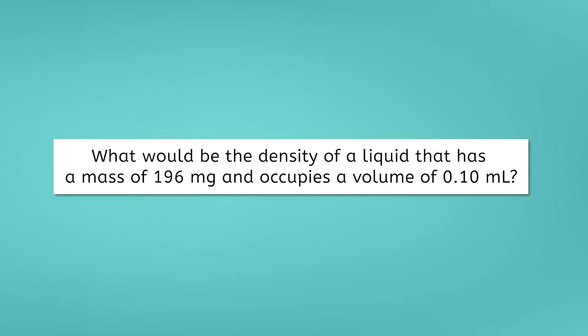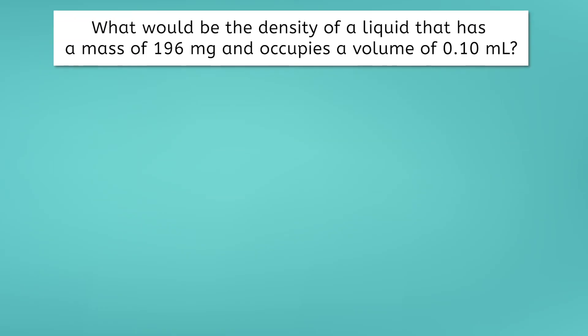Our first step is to write down what we know. We know the mass is 196 milligrams, so that goes with the M in our list. Our volume is 0.10 milliliters, so that goes with the V. And our density is what we are solving for, so we put an X next to density. Let's check our units. Are they grams for mass and milliliters for volume? Oh no, they aren't. Our mass is given in milligrams, not grams.